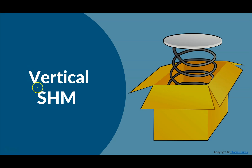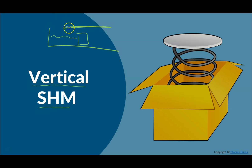Welcome back everybody with simple harmonic motion. Today we are talking about vertical simple harmonic motion. So far we've just had objects oscillating horizontally back and forth, but this time we're going to have objects oscillating vertically back and forth. What you're going to find is that pretty much the math and everything is kind of the same. There are some differences, but how things work are very similar.